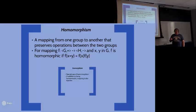A homomorphism is a special kind of mapping where when you go from one group to another, it preserves the operation between those two groups. This means if you have two groups G under addition and H under multiplication, and you have two elements x and y in G, if f is homomorphic, then f(x + y) = f(x) × f(y).